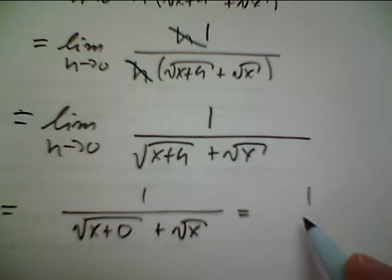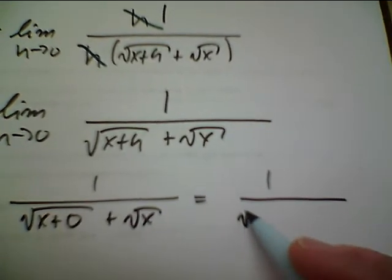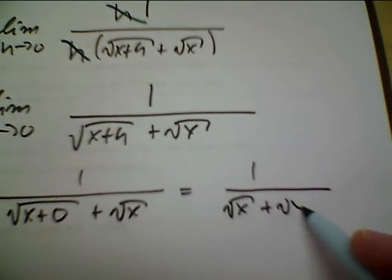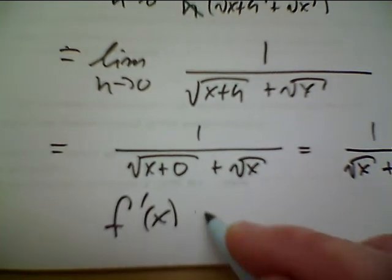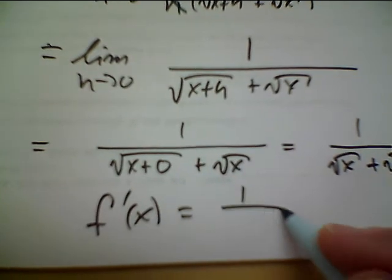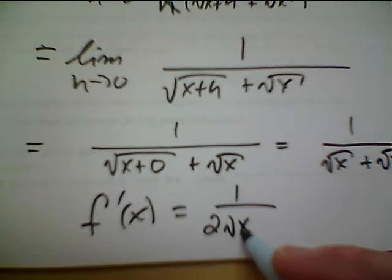And, that is just simply the square root of x plus the square root of x. But, that's two square roots of x. So, I have f prime of x is equal to 1 over 2 root x.